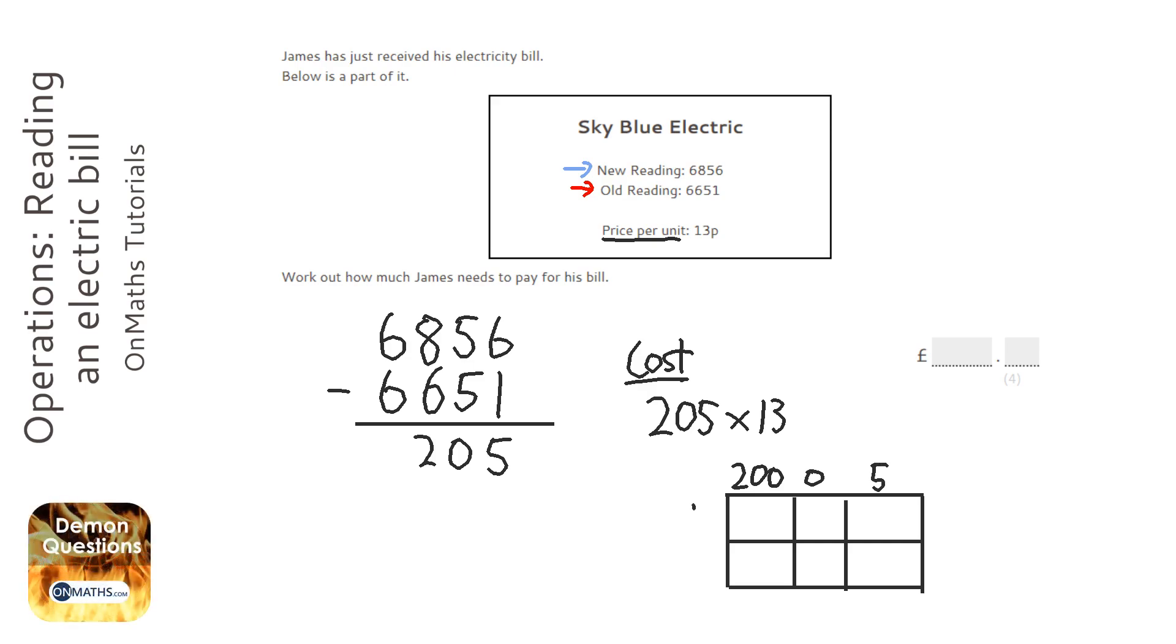200 times 10 is 2000, 5 times 10 is 50, 200 times 3 is 600, and 3 times 5 is 15. So we can add these together.